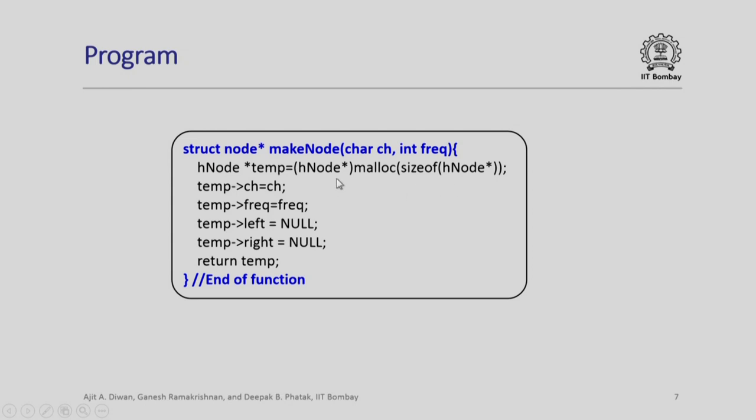Once a temporary node is created it has to be filled up with the given character and given frequency which are appearing as parameters. We simply set ch to temp ch, temp frequency to frequency and since this node has been just created it has no left child right child. We set these pointers as null is as simple as this to create a node.